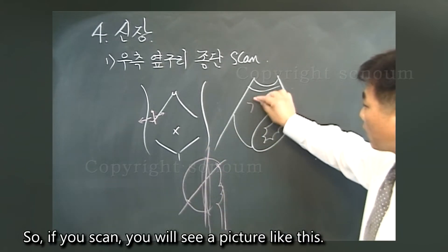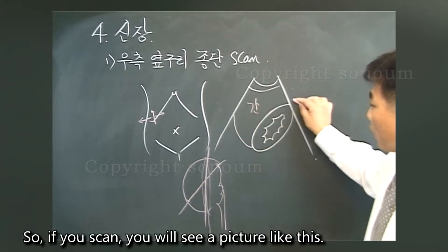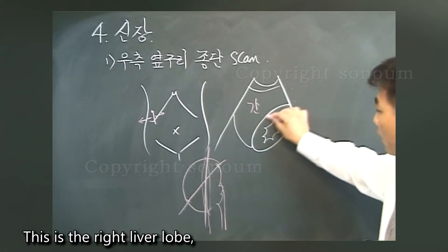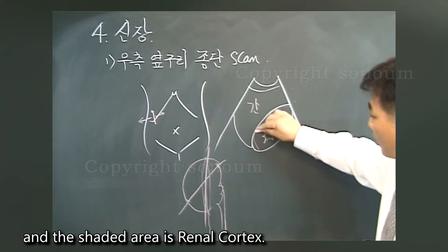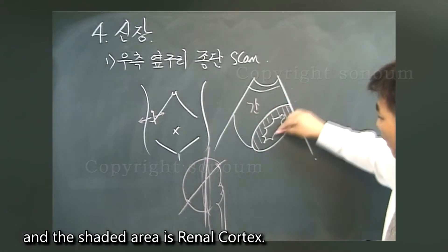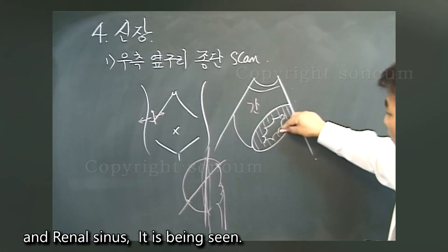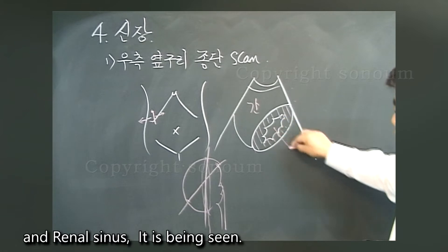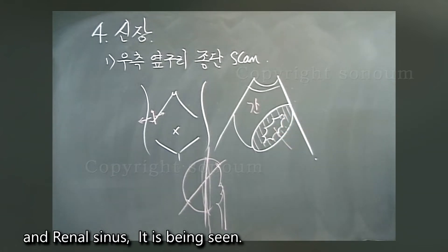If you scan, you will see a picture like this. This is the right liver lobe, and the shaded area is the renal cortex and renal sinus, which can be seen here.